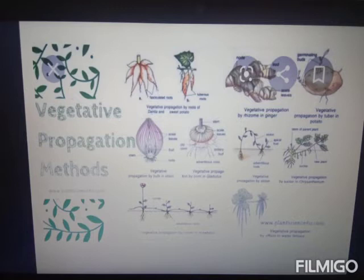Reproduction is a biological process in which new organisms arise from the parent. In sexual reproduction, offspring share characteristics of the parent but vary from it. The modes of reproduction are classified into two types: asexual reproduction and sexual reproduction.